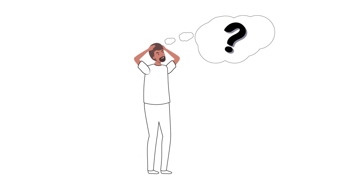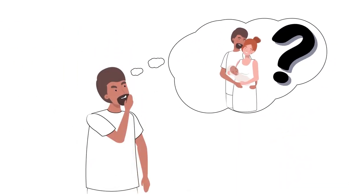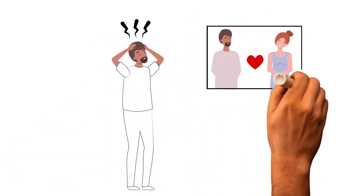Ken is struggling with a decision. His partner wants to have a child, but Ken feels unsure about becoming a parent. This dilemma is causing him a lot of stress and is affecting their relationship.